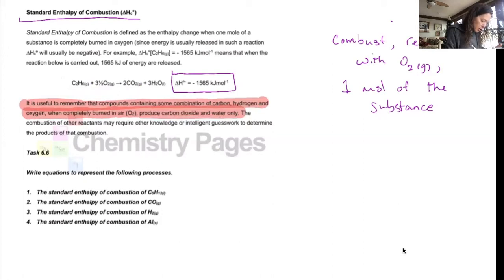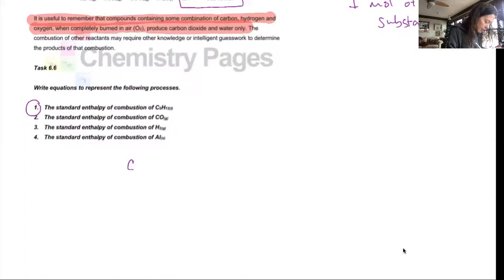So if we were to write the standard enthalpy of combustion of C5H12, we would have to ensure that only one mole of the C5H12 was present in our equation. That would give us the five carbon dioxides and H2O, we would assume in its gaseous phase, six. That's 10 plus six oxygens. And that would be an H right there. Okay. And we could do that for all of these, right?